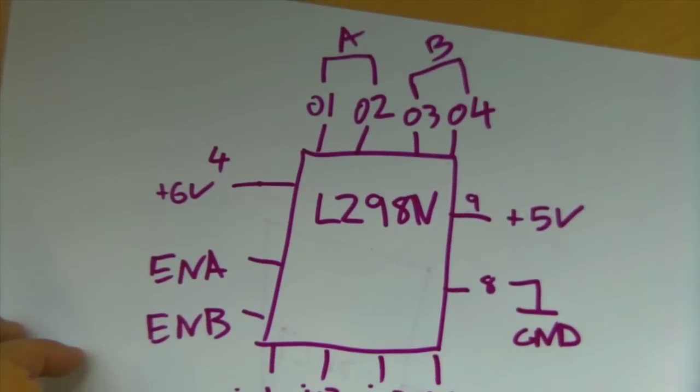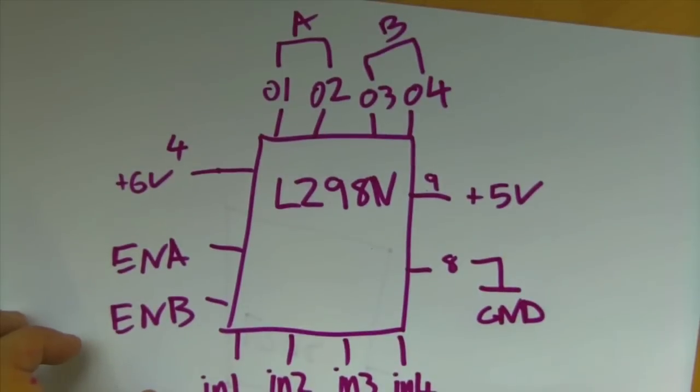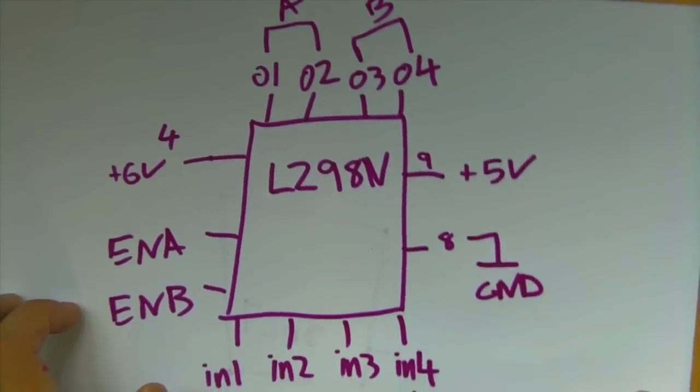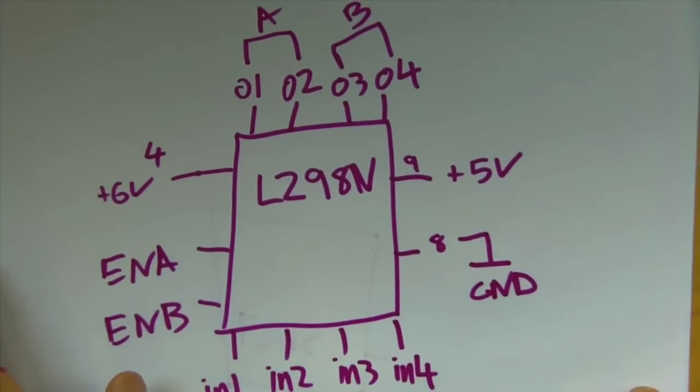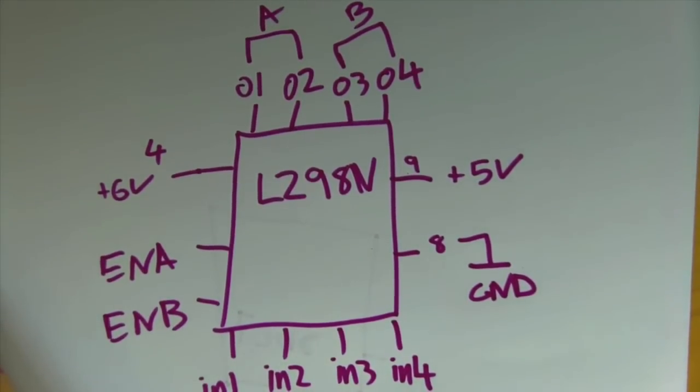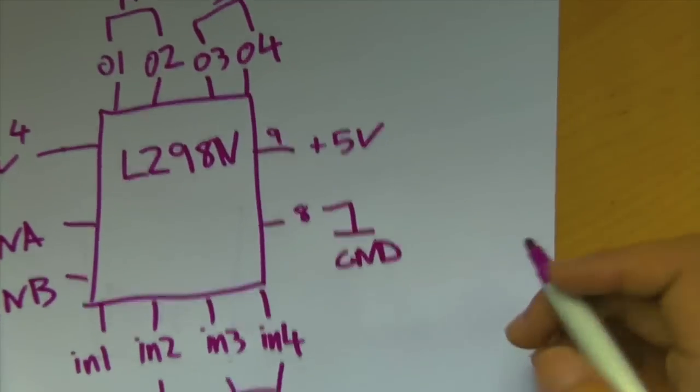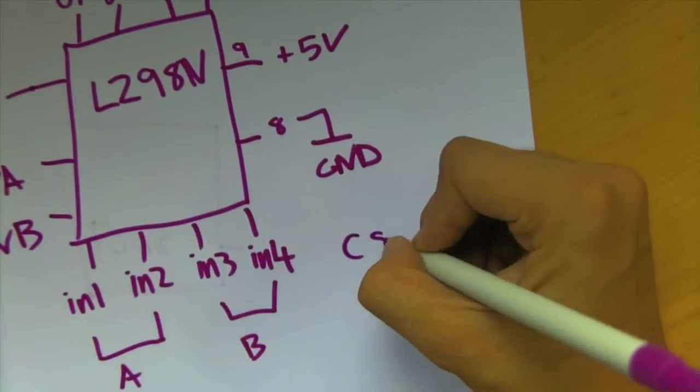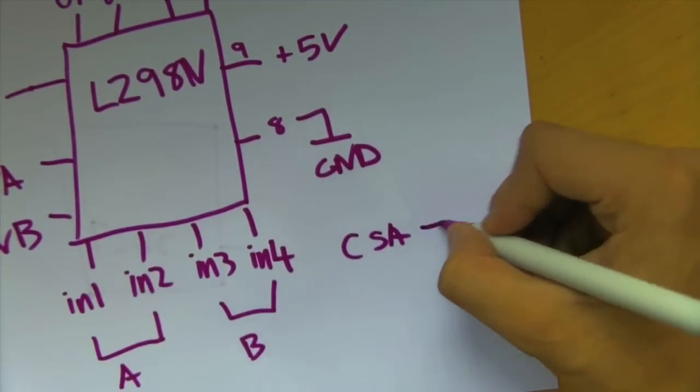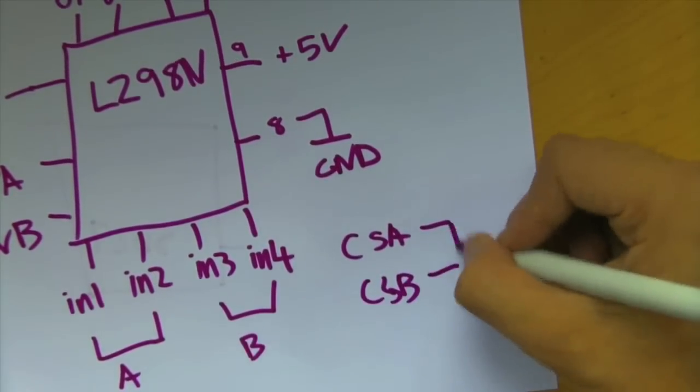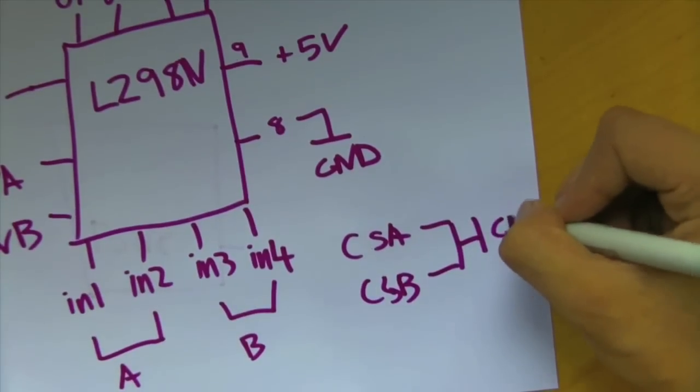Yep, you also have 2 other pins. Pin 1 and 15. Those are current sense pins. You can use them to measure how much current the motor is drawing. But, just to get it to work, we'll tie them to ground for now. CS A, current sense A, and current sense B, to ground.